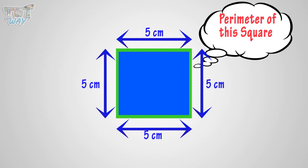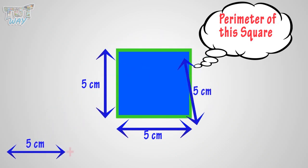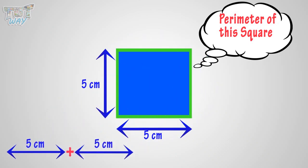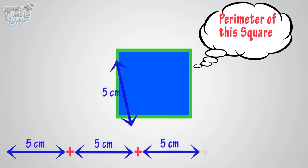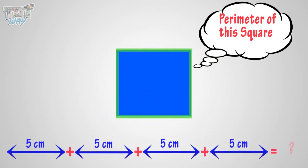We will add the lengths of all sides of this square. So we get the perimeter of this square is 20 centimeters. Good!